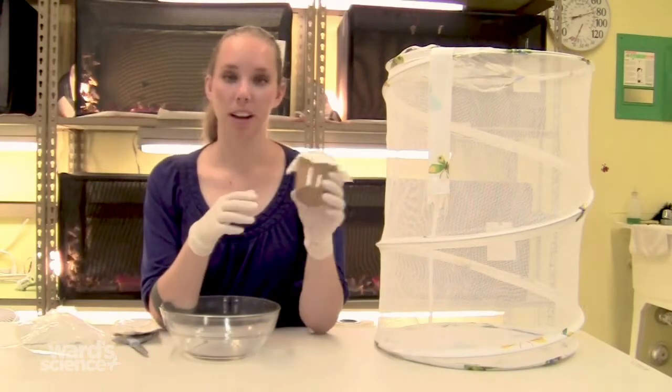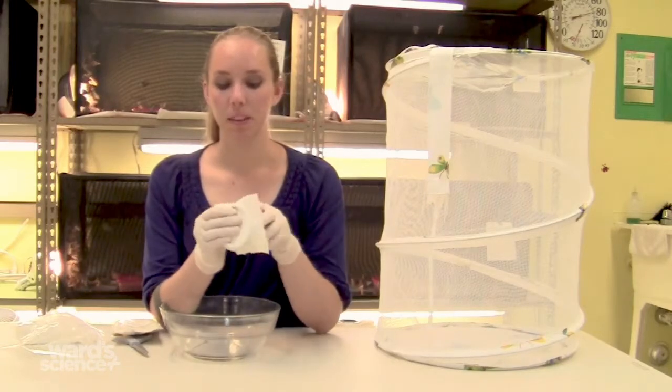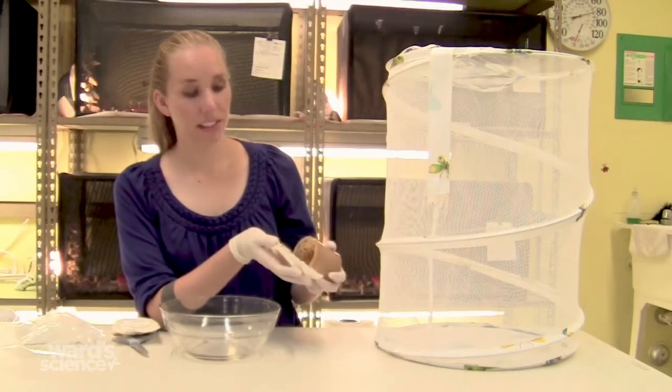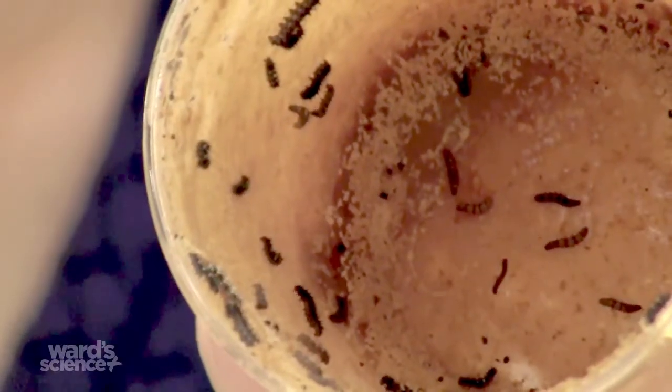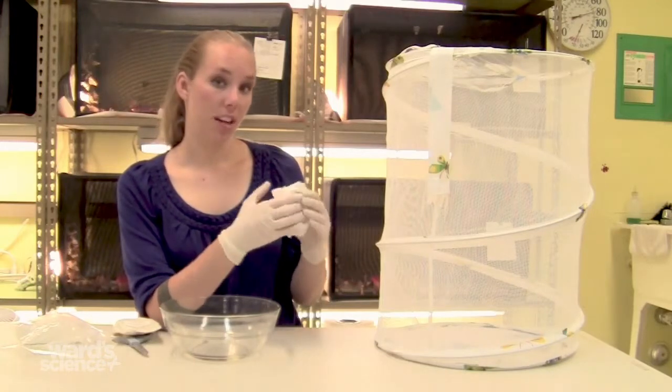When you receive your butterfly larvae, they'll arrive in a cup like this with food on all the inside. We overpack each order of 30 larvae to ensure that you receive at least 30, but you can receive between 30 and 80 larvae.